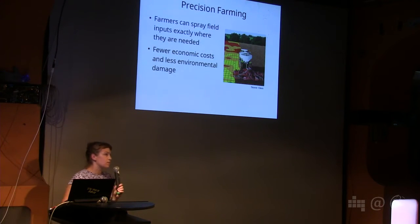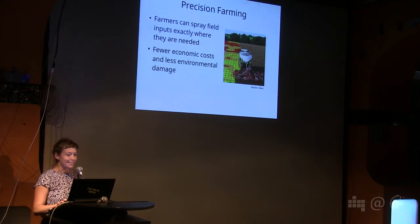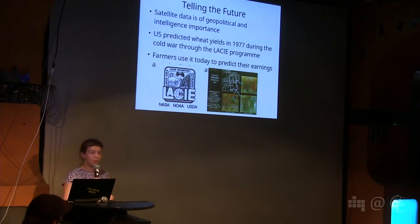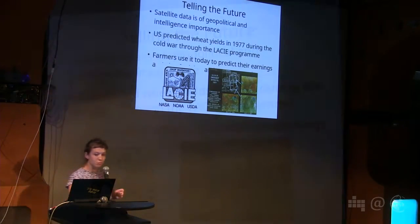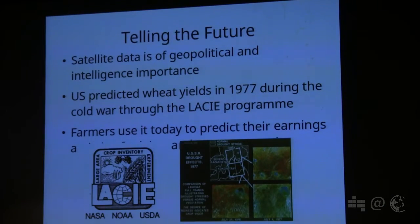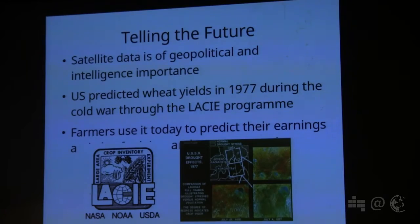The agricultural community was a very offline community until recently. But another way that satellite imagery is used in agriculture is that it tells the future — you can do yield forecasts, which means you can tell how much you're going to harvest before the end of the season. This actually isn't new technology; it's been used by governments for a long time, and it's actually a tool of geopolitical and intelligence importance.